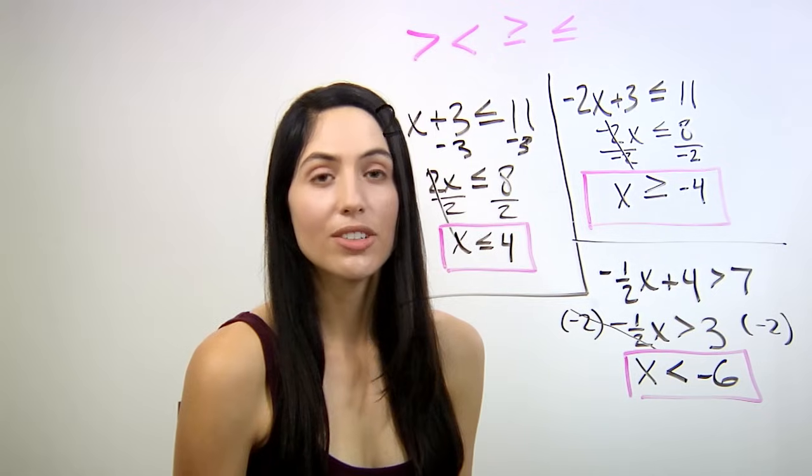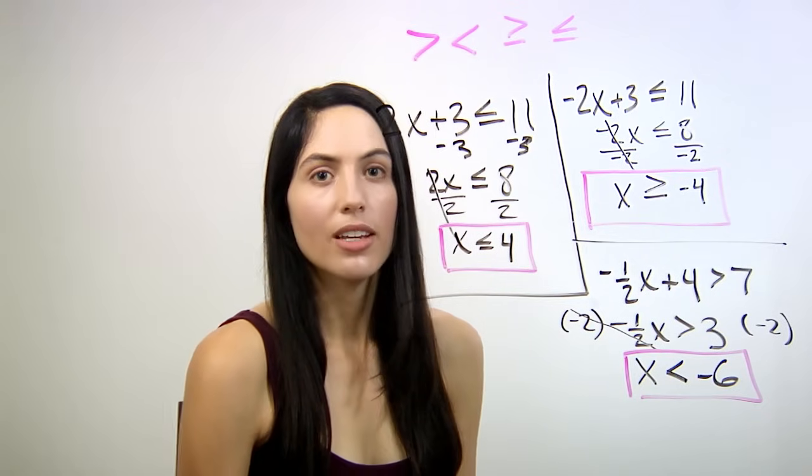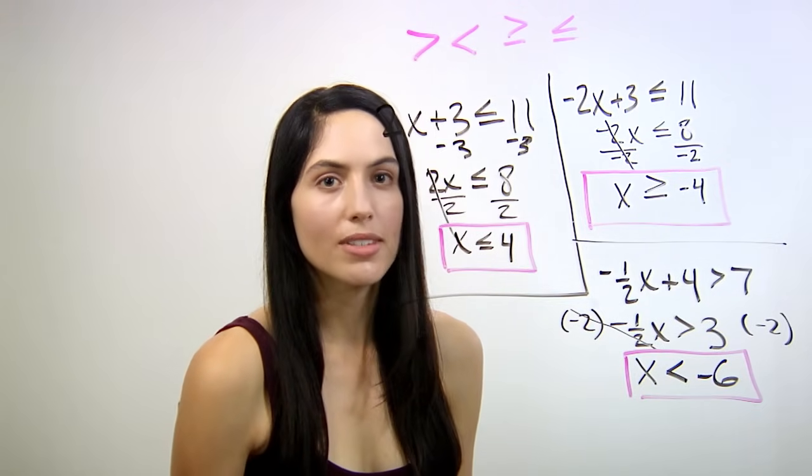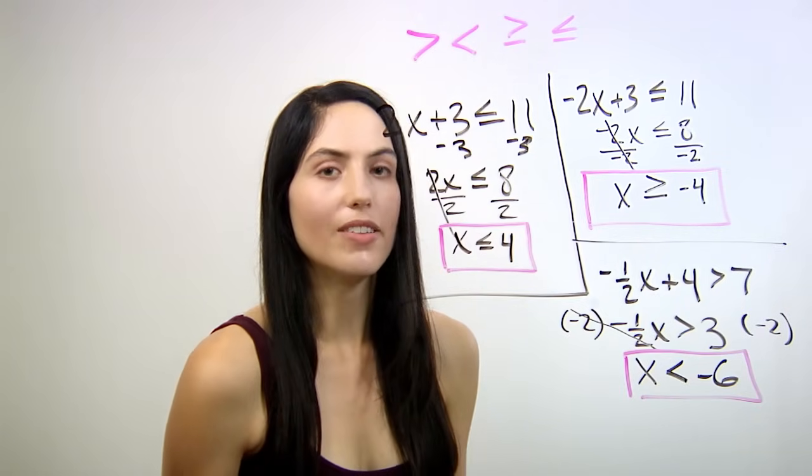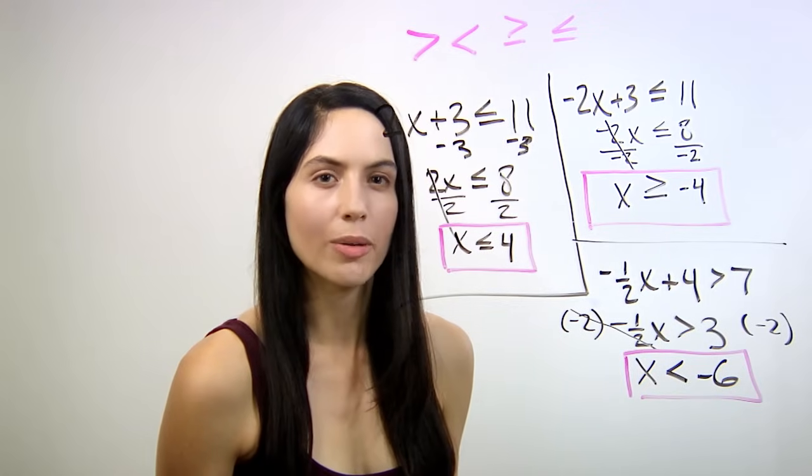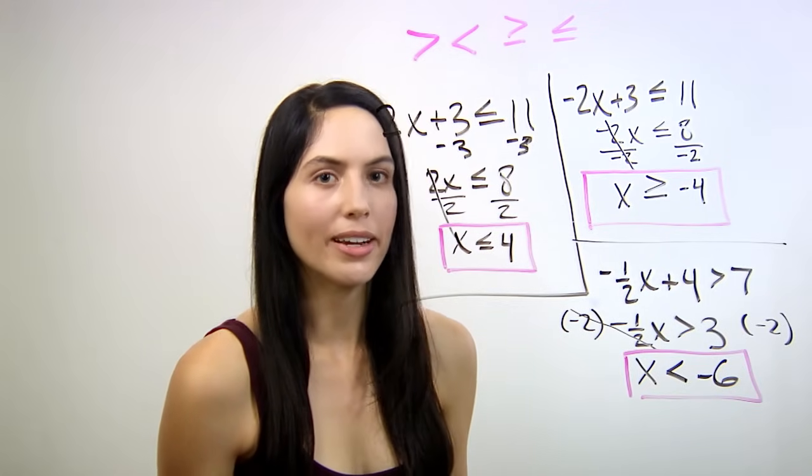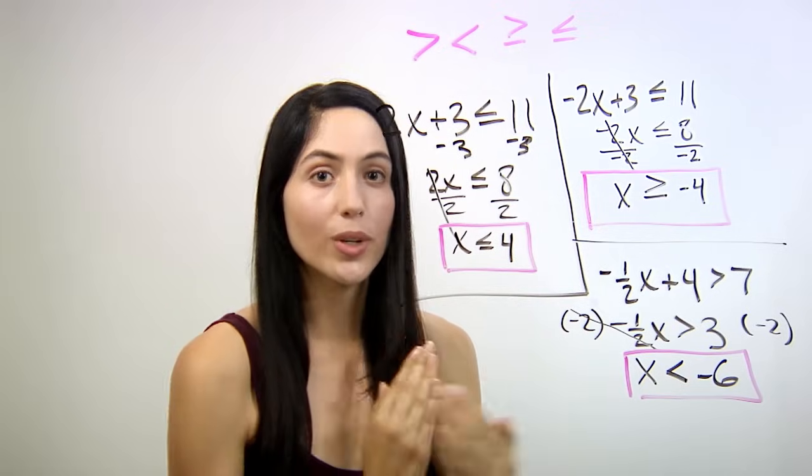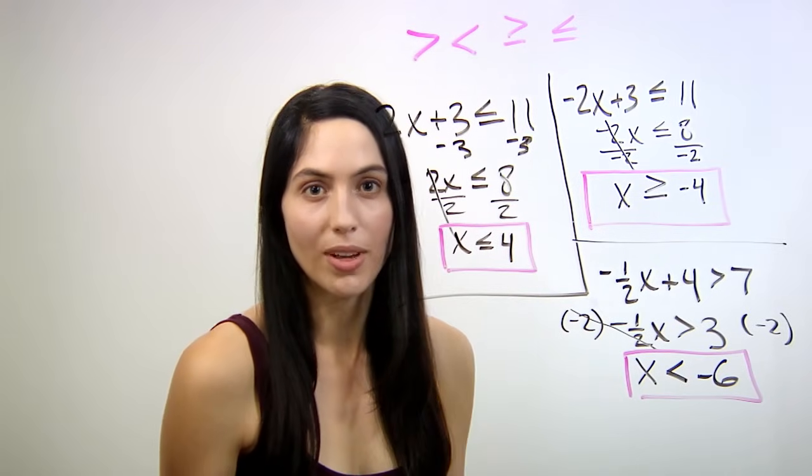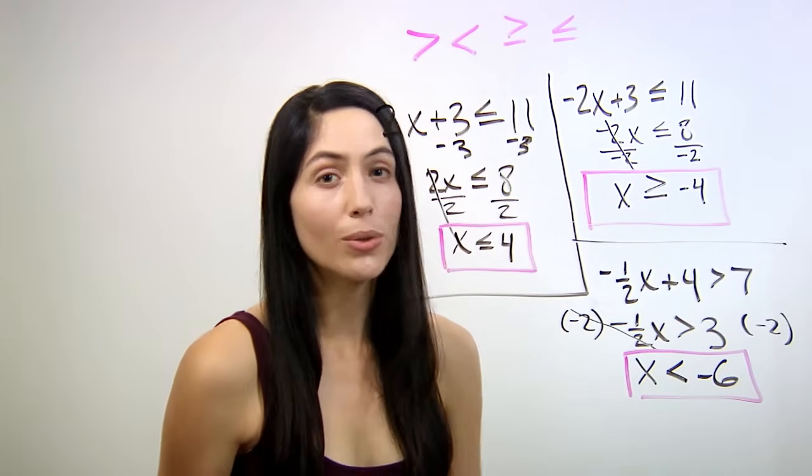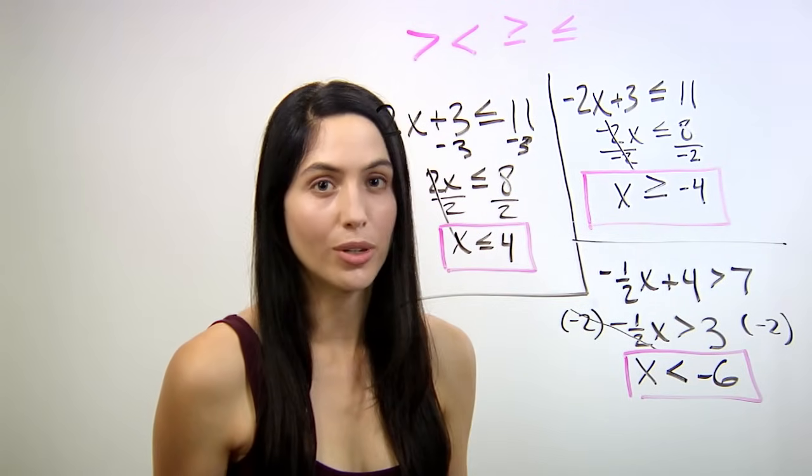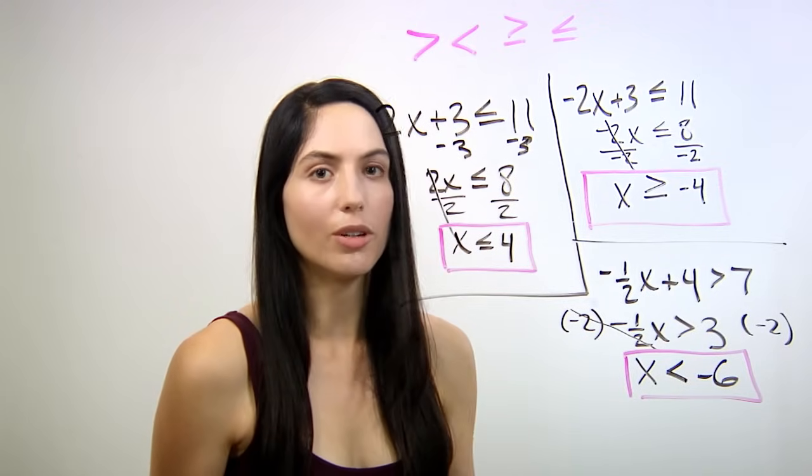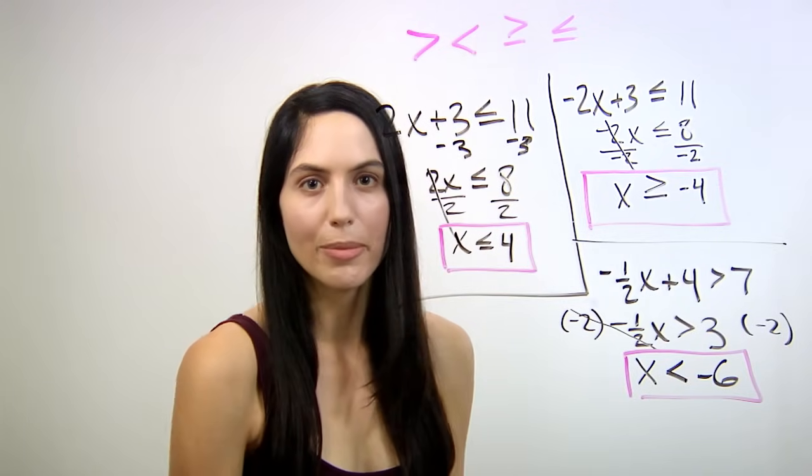So if you've been having trouble with these inequality problems, just remember: it's the same as solving for x in a normal equality, normal equation. Except, if you ever multiply by a negative number or divide by a negative number, you have to switch the direction of your inequality symbol. You don't have to switch the symbol if you're adding a negative number or subtracting a negative number, only if you're multiplying or dividing by a negative number.